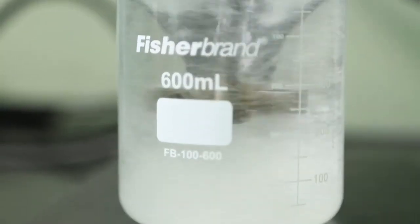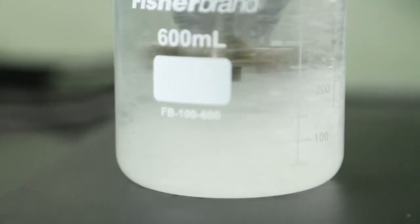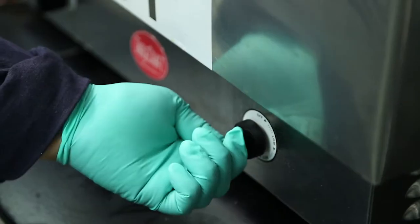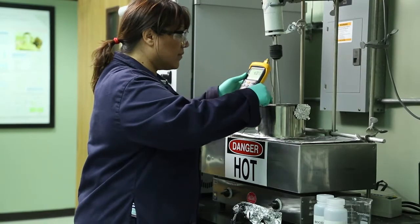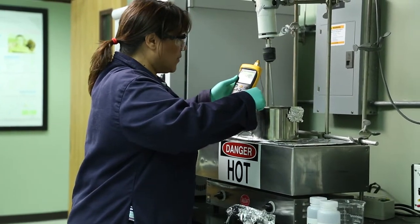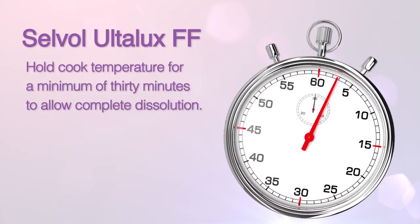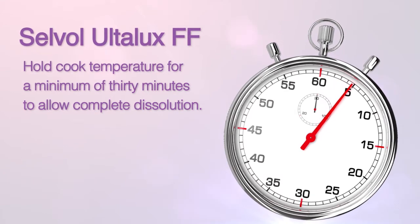Once the particles are well dispersed in cool water, the suspension can be heated. Slowly heat the solution to the minimum dissolution temperature detailed in the Ultilux solution preparation guide. Cover the slurry to minimize water loss. Hold temperature for a minimum of 30 minutes to allow complete dissolution.